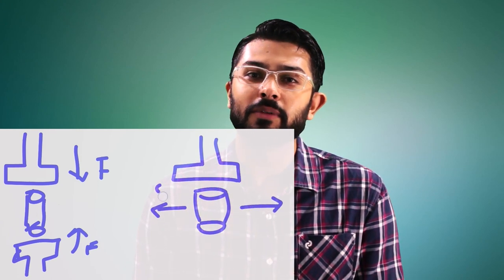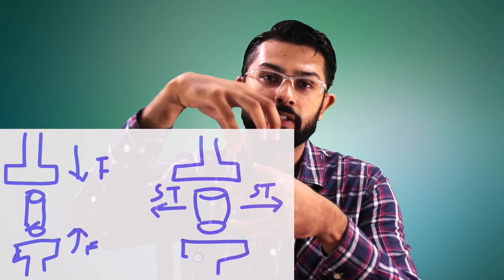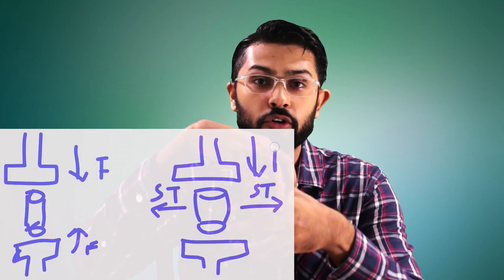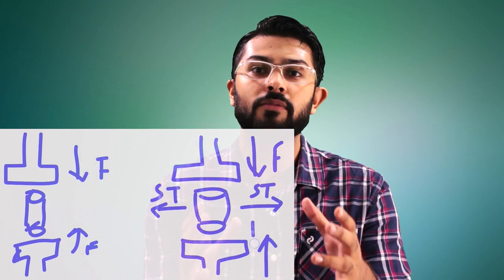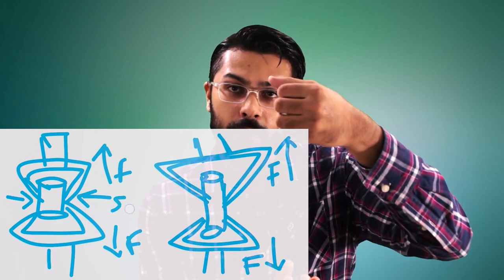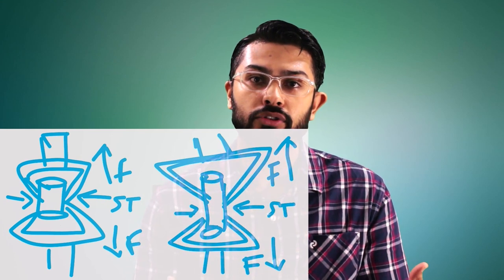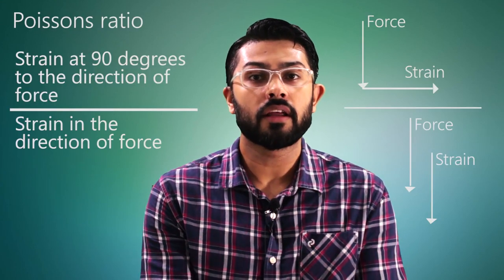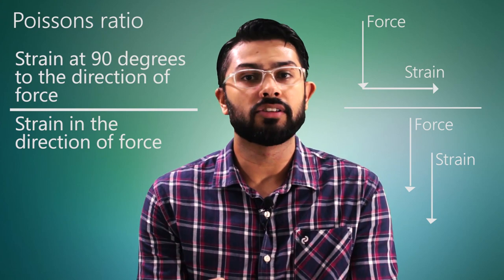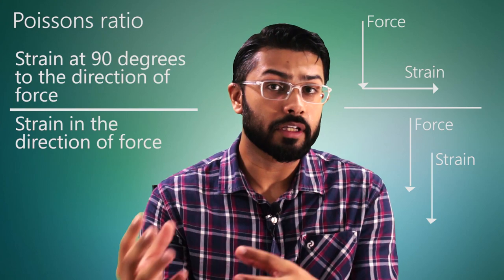We can think of this as the body trying to escape the stress by changing its dimension in another direction. An example is when a cylinder is placed under high compressive stress, it may undergo barreling. Similarly, if a cylinder is placed under high tensile stress, it may become thinner in cross-section. To observe these alterations in shape, there is Poisson's ratio, which gives an indication of the strain occurring at 90 degrees to the direction of applied force and that occurring in the direction of the force.